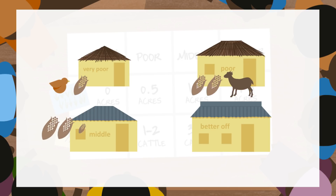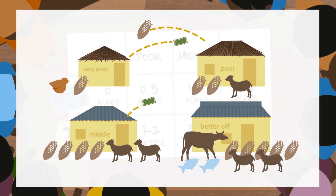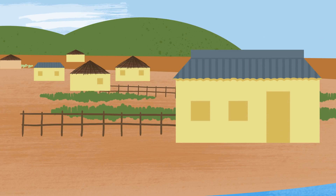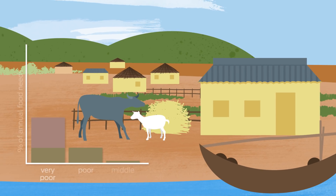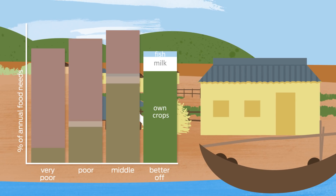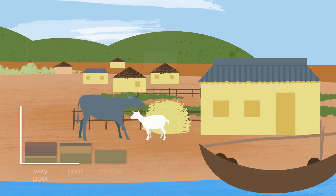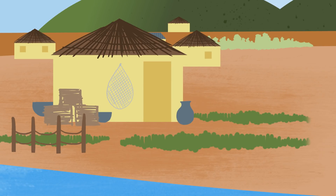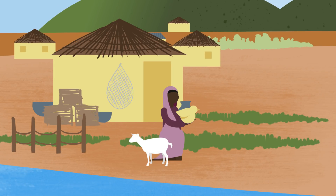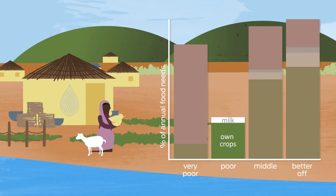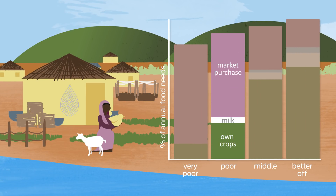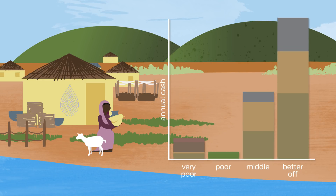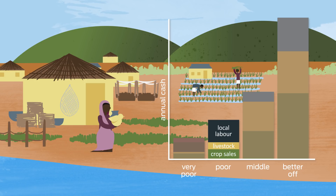All food and cash sources are quantified, and the economic links between wealth groups are mapped out. In this example, better off households own land, livestock and boats. They produce most of the food they eat, and buy the remainder from the market. They earn money from selling crops, livestock and fish. Poor households have less land, fewer livestock and no boats, so they produce less of their own food and have to buy more from the market. To earn cash, they sell crops and livestock, but most of their money comes from working for wealthier households within the village.